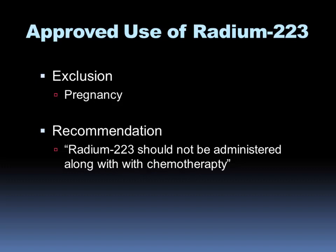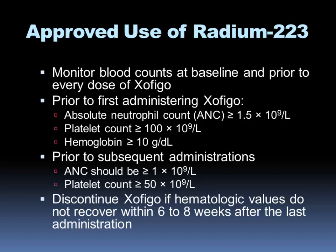The recommendations when giving radium-223 are to monitor blood counts at baseline and prior to each administration. Prior to the initial dose, patients should have an absolute neutrophil count greater than 1.5 × 10⁹/L, a platelet count of at least 100,000, and hemoglobin greater than 10. Prior to subsequent administrations, you no longer need to follow hemoglobin — just ensure the ANC is above 1 and platelets above 50. If counts are below threshold, you can delay therapy by several weeks. If counts haven't recovered after six to eight weeks, the recommendation is to cease therapy.